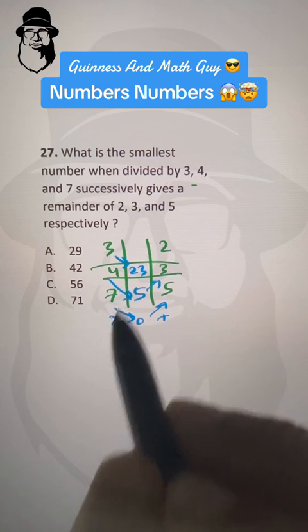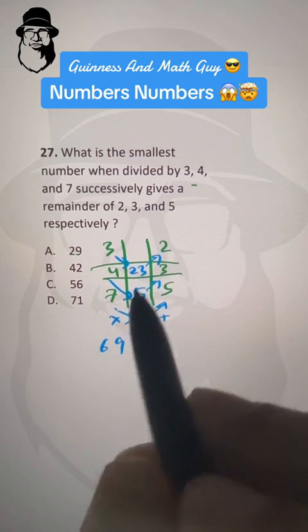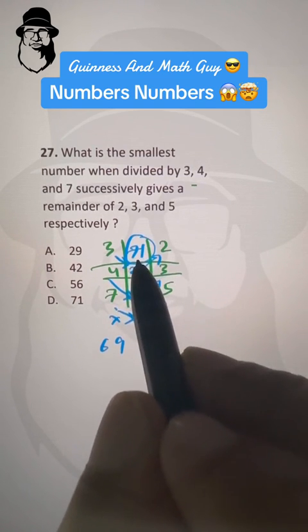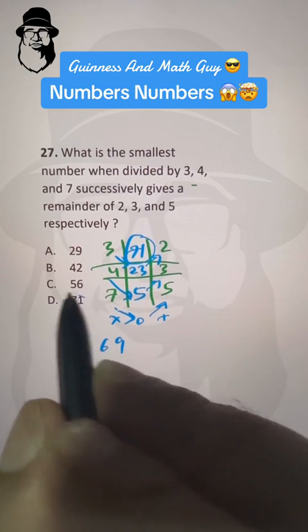3 times 23 is 3 times 2 is 6, and 3 times 3 is 9, 69 plus this 2 will make it 71. That is the smallest number that fulfills these conditions. And that's our answer, choice D.